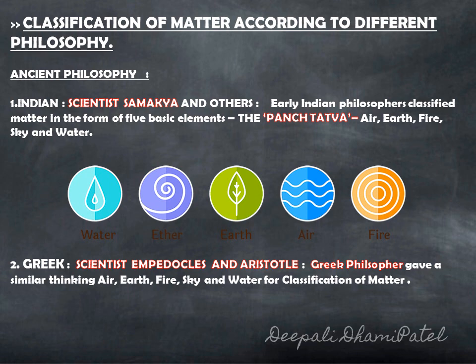Panch Tattwa is a Sanskrit word — Panch means five and Tattwa means elements. So they classified matter into air, earth, fire, sky and water. The Sanskrit or Gujarati words are: air is Vayu, earth is Prithvi, fire is Agni, sky is Akash, water is Jal. Similarly, Greek scientists like Aristotle gave a similar philosophy saying that matter is air, earth, fire, sky and water. We are also very familiar with the concept that our body is made up of these Panch Mahabhut.